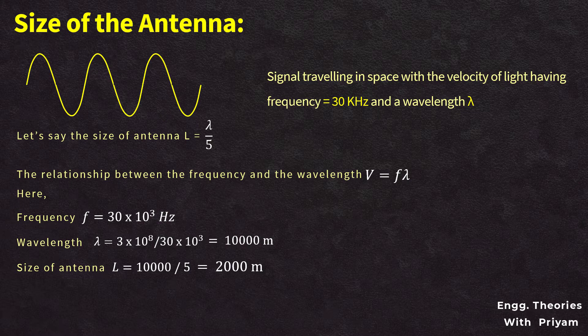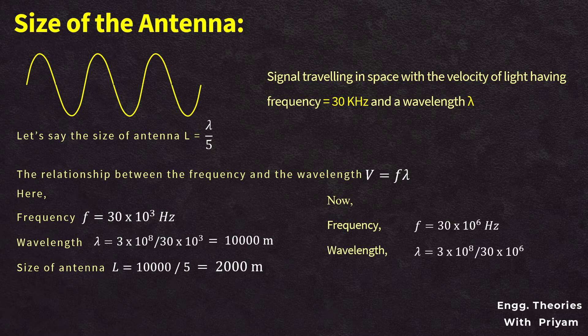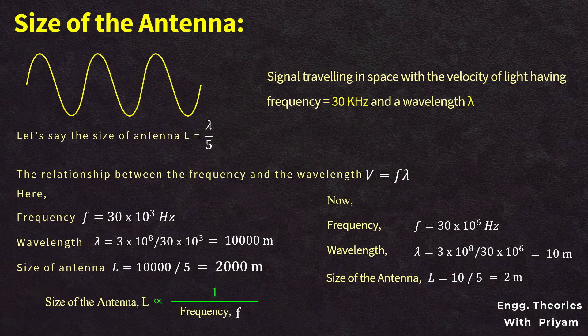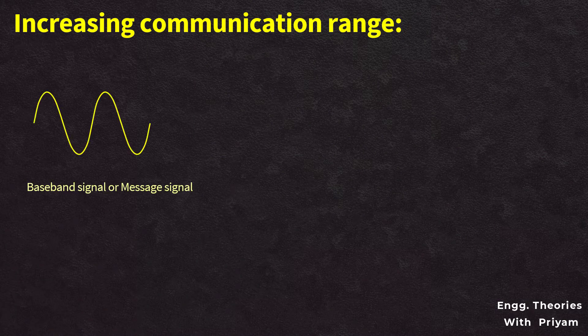Instead, if we take the signal frequency F = 30 MHz, then λ = 3×10⁸ / (30×10⁶) = 10 meters, and antenna size L = 10/5 = 2 meters — which is achievable. So the size of the antenna is inversely proportional to frequency. The reduction in antenna size can be done by increasing the frequency, and this increase can be done easily with the help of modulation.